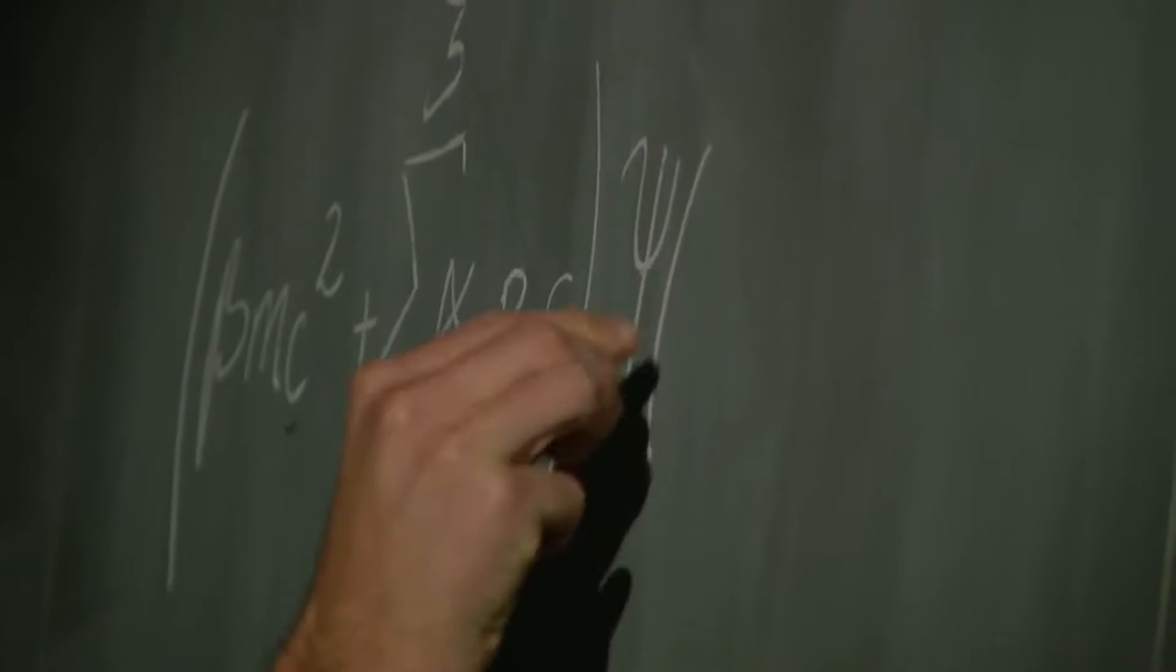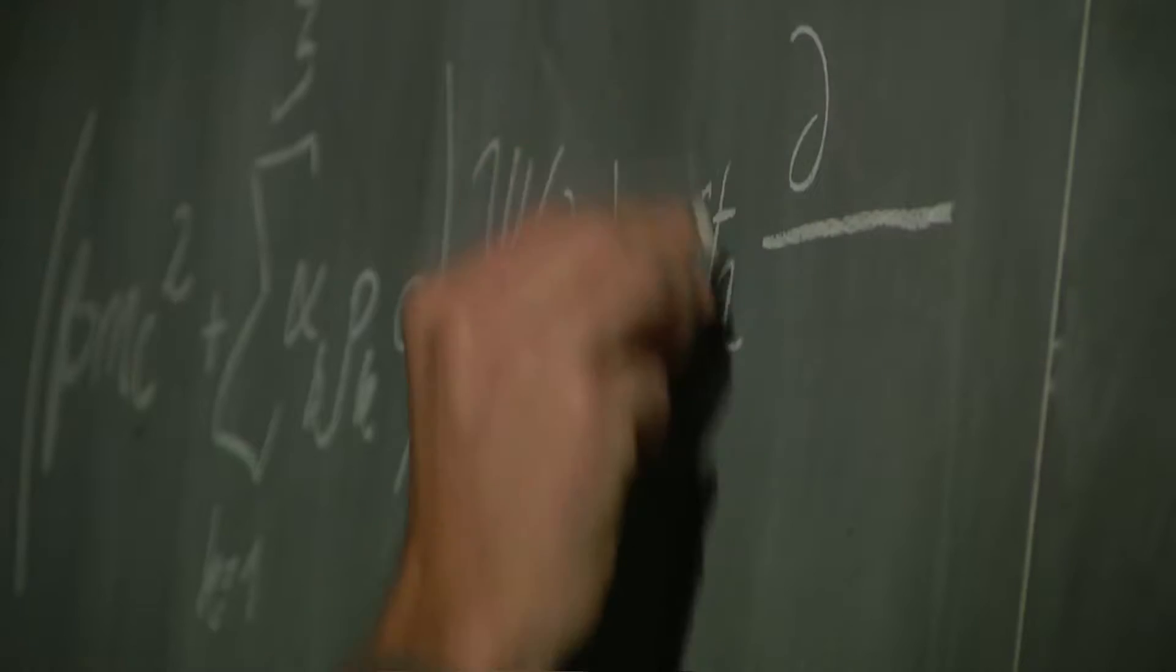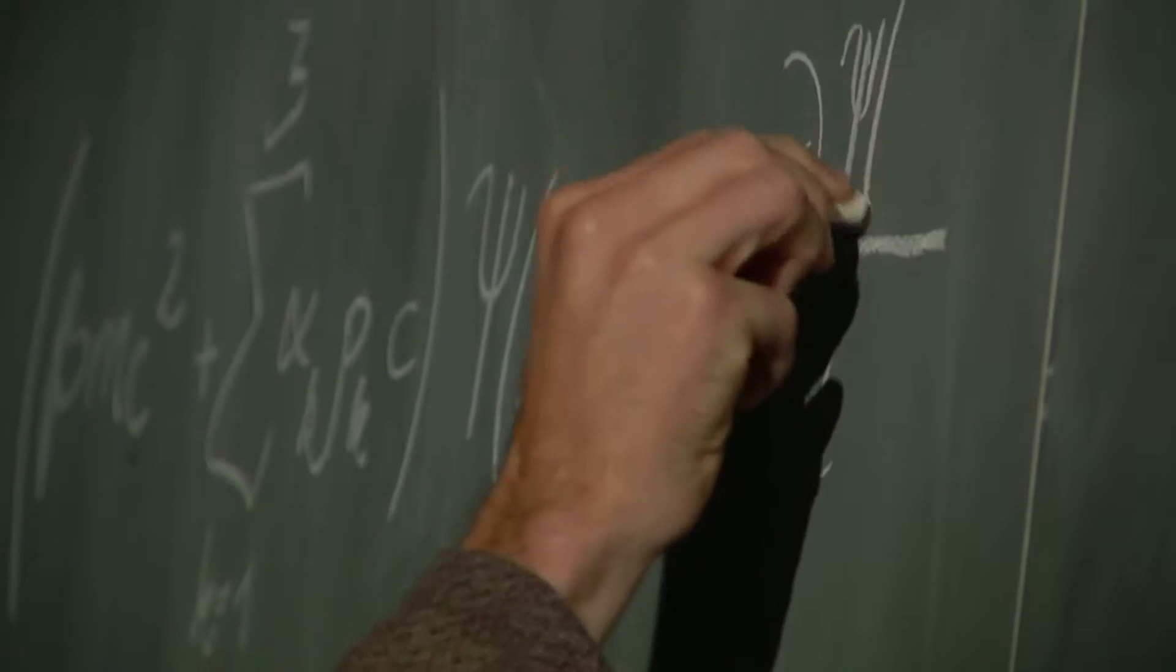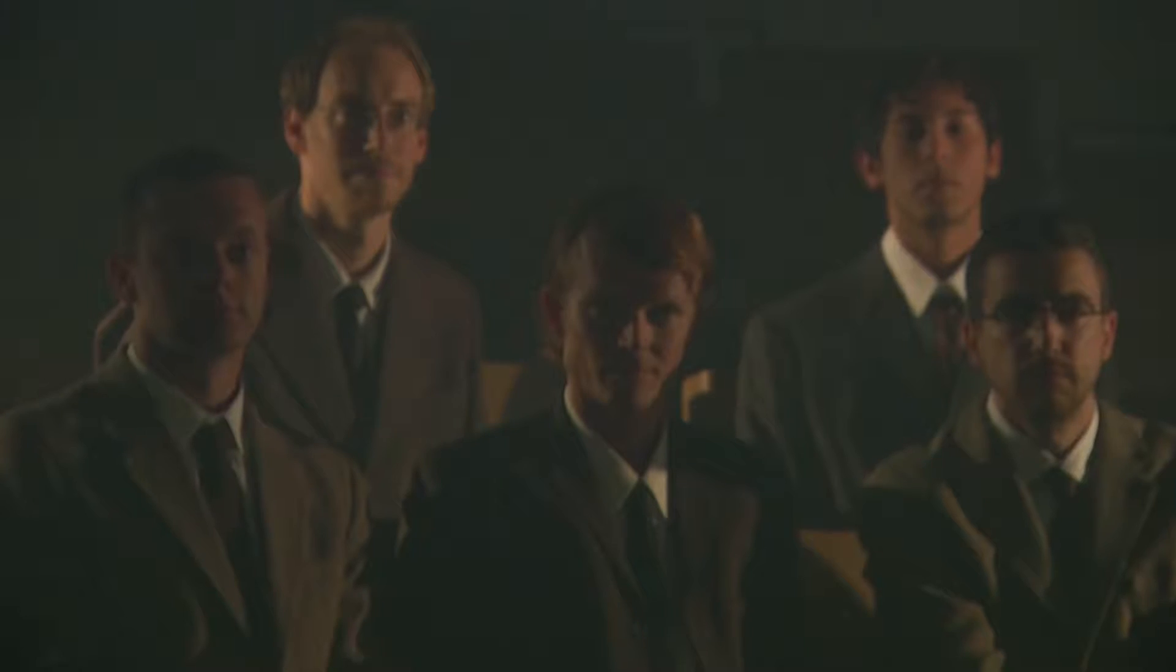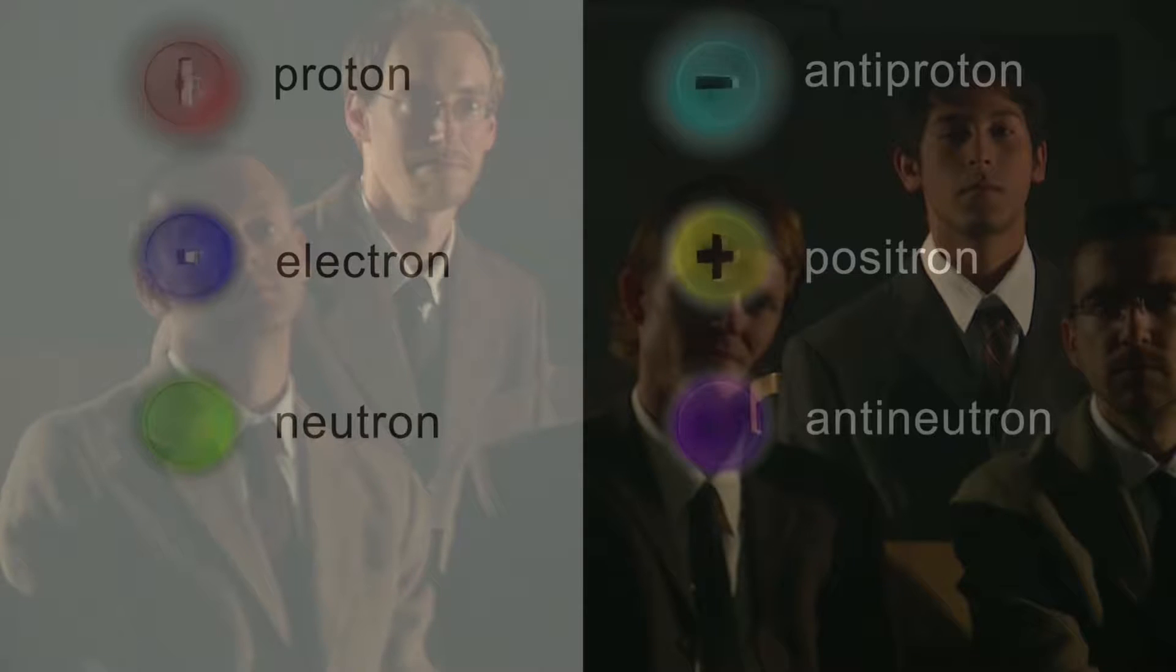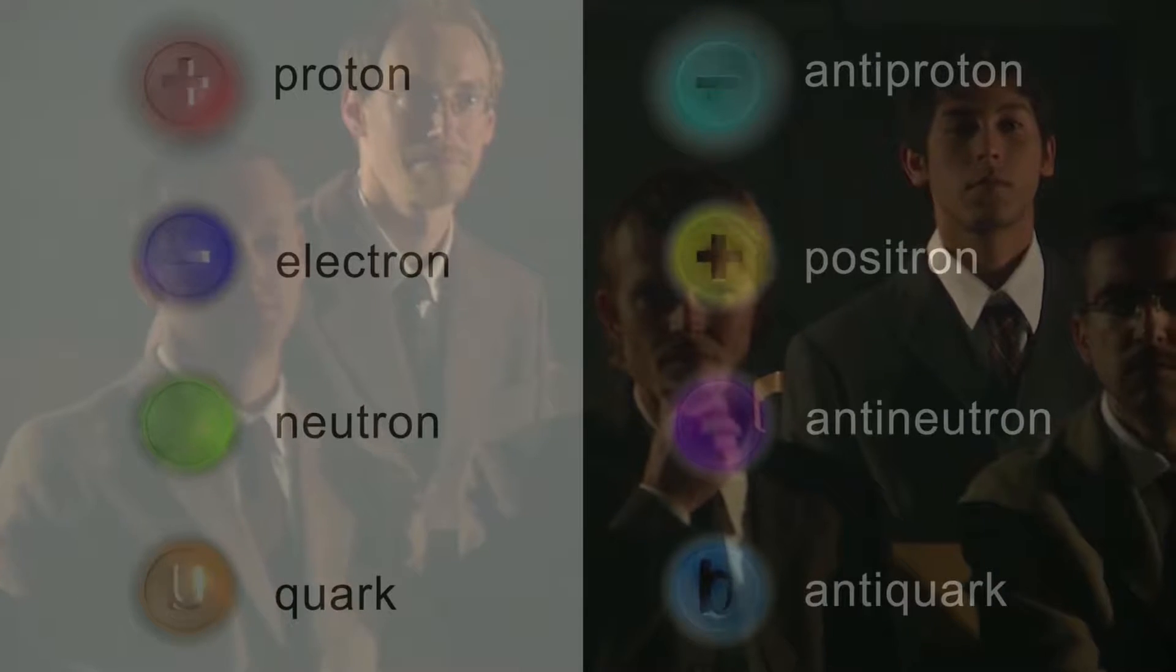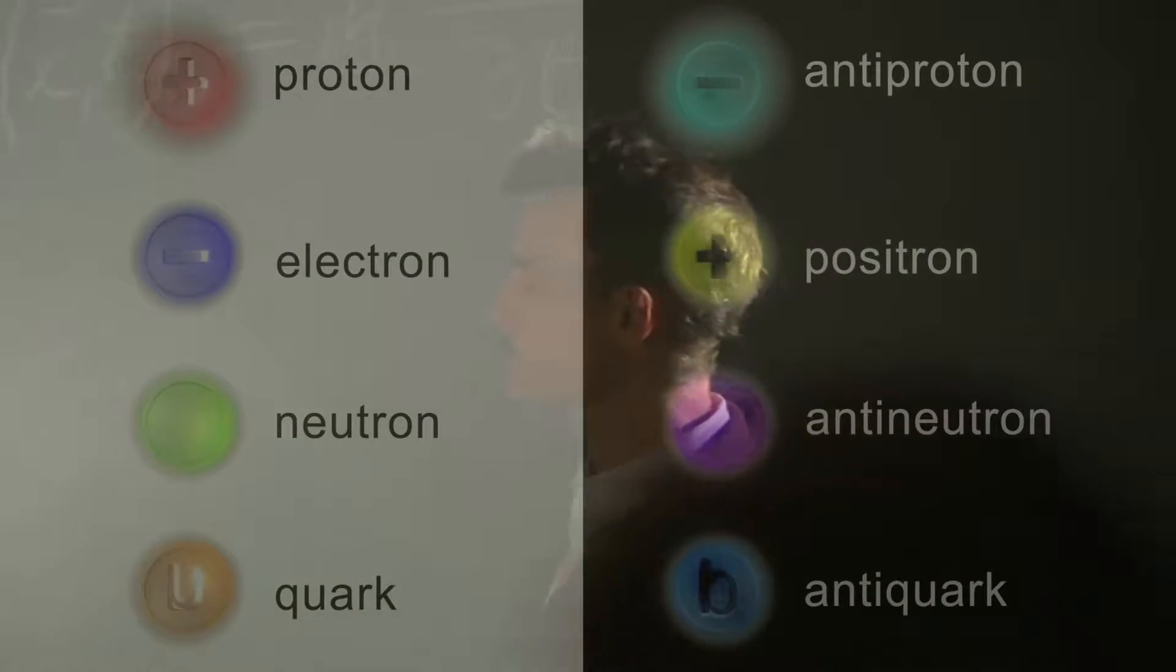The issue gathered dust until 1928, when a young physicist, Paul Dirac, wrote equations that predicted the existence of antimatter. Dirac showed that every type of particle has a twin, exactly identical but of opposite charge. So for every proton, there's an antiproton. For every electron, there's a positron. For every neutron, an antineutron. Within them are quarks and their twins, the antiquarks.